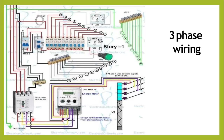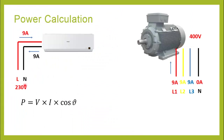In three-phase wiring we have four conductors — three for each phase and one for the neutral. To connect a single-phase load, we use one phase and the neutral and connect the whole circuit. If we want to power a multi-story building, we can connect all the single-phase loads equally across all three phases so that the single-phase load acts as a balanced load on all three phases.